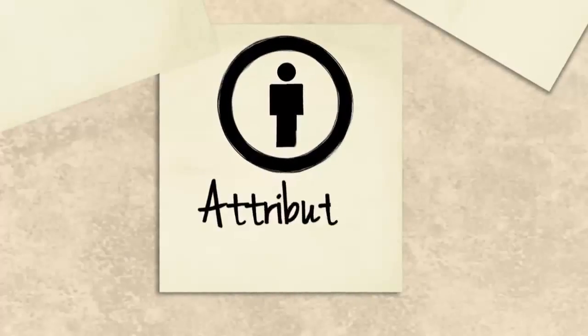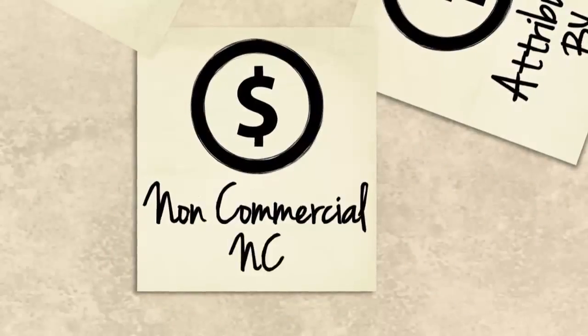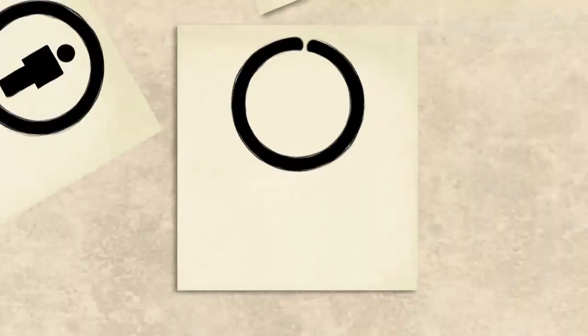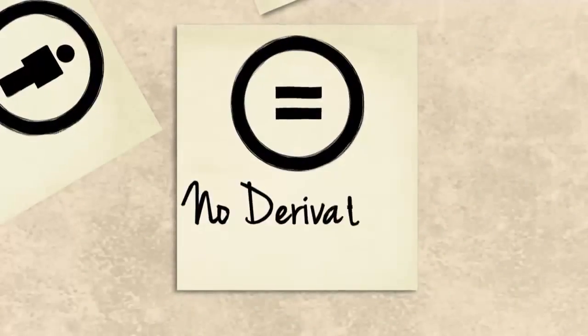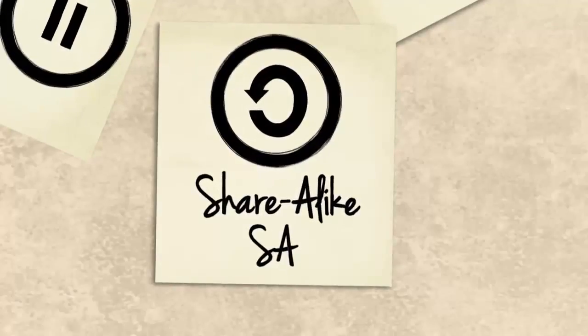What are the licenses? This sign attributes the work to its owner — how do you want to be known? This sign prevents the user from using the creative work for commercial purposes. This sign indicates that the user can use the work but cannot apply any changes to it — no remixing! This sign gives permission for modifying and distributing the creative content, but the user must share their work under the same terms as the original. Keep it moving forward.